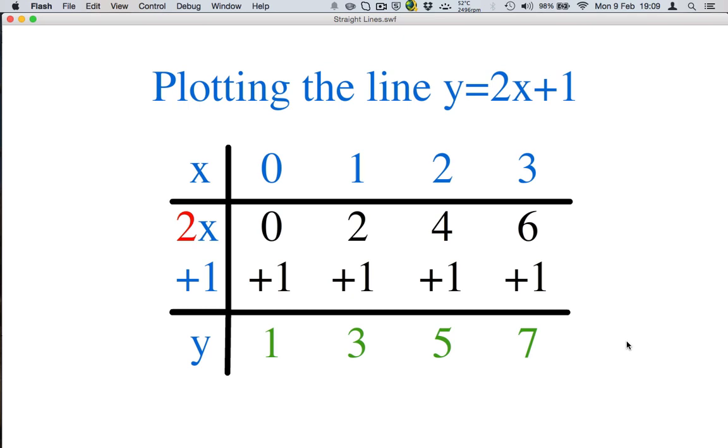Now we're ready to write down our coordinates. We have 0 and 1. That's our first coordinate. 1 and 3 are our second coordinate. 2 and 5 and 3 and 7. Nice and easy. So let's go on to plot them.